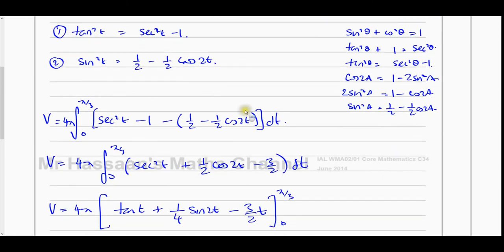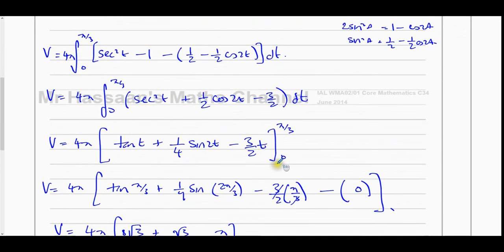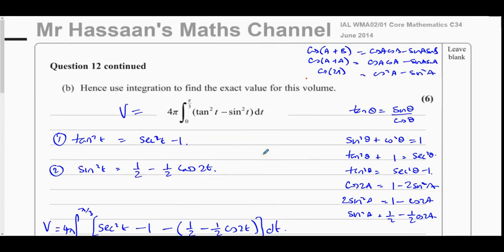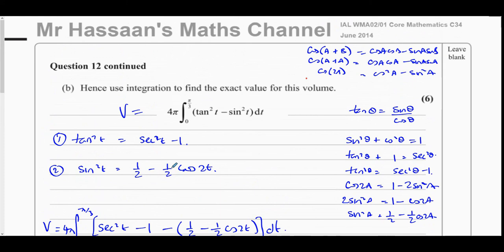They didn't ask for any particular form, just an exact value — so that simplified exact form is the answer to question 12 part B. This topic is more related to P3, involving integration of trig functions using identities to transform them into integrable forms. Part A was more P4-related, which is why the video was split into two parts.